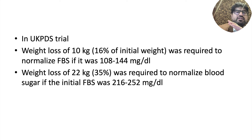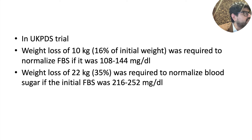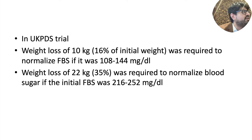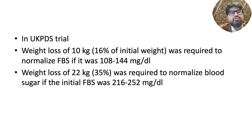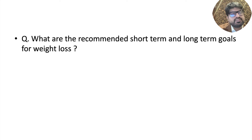Even earlier studies like the UKPDS trial found that patients who lost 10 kgs - about 16% of weight - saw their fasting blood sugar normalize from around 140. Those with blood sugars of 200 to 250 who lost 20 to 30% of weight saw fasting blood sugar become absolutely normal. The newer DiRECT trial shows that even with 15% weight loss, you can achieve good results.